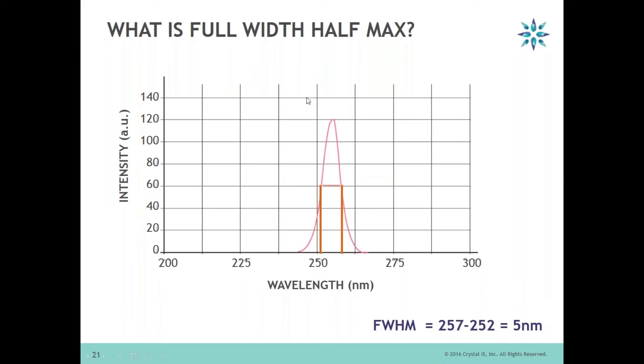Taking another example where this particular LED has a maximum at approximately 265 nanometers, the intensity for this is 120. So you are looking at the intensity of 60 as a half max and dropping onto the wavelength.